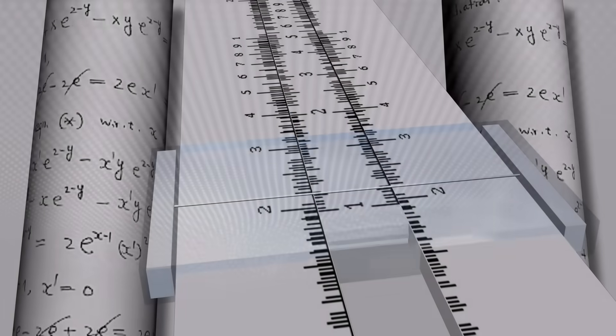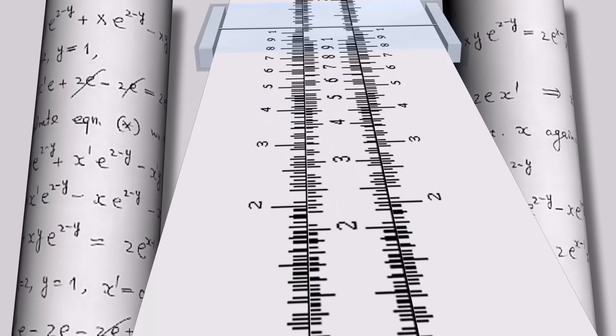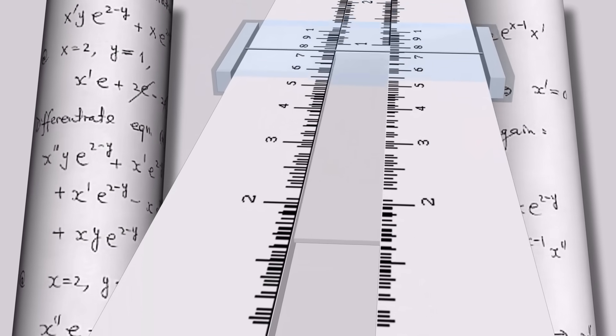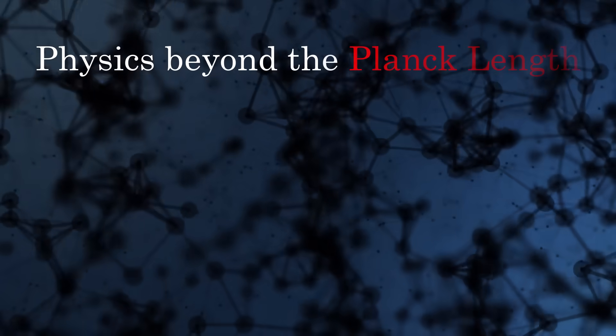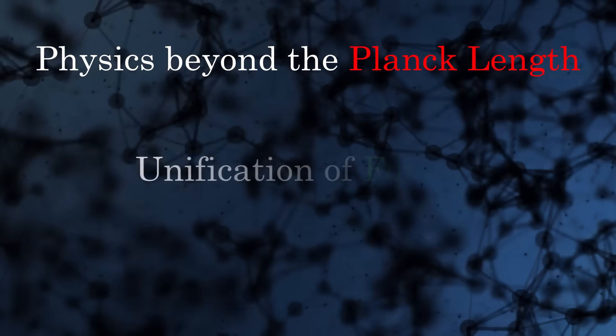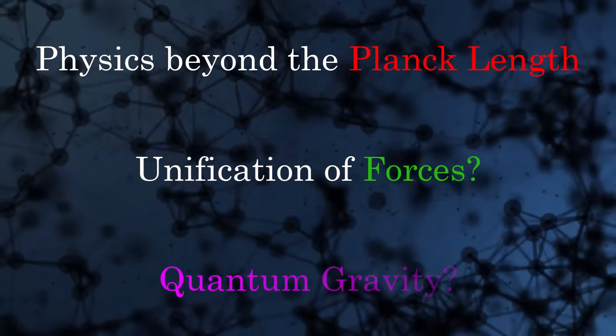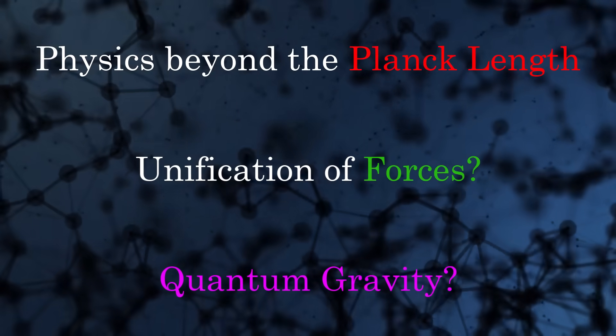The idea of it being a sort of spatial resolution is not necessarily correct, with the true meaning of the Planck length being far more intricate and fascinating. What if I told you there could be physical processes happening on scales smaller than the Planck length, and that understanding them is key to figuring out how the universe came to be?